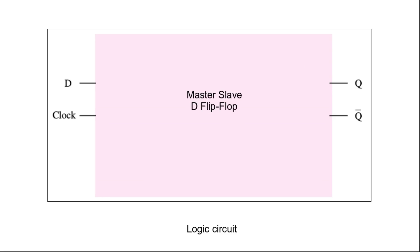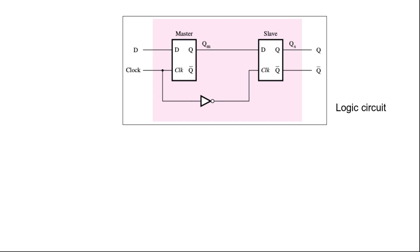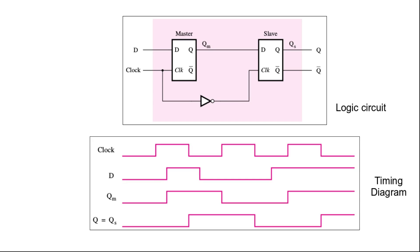The D flip-flop has a D input and a clock signal input, and it produces two outputs: Q and Q prime. Now let's try to understand its working using the timing diagram.